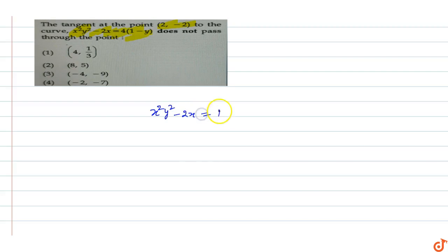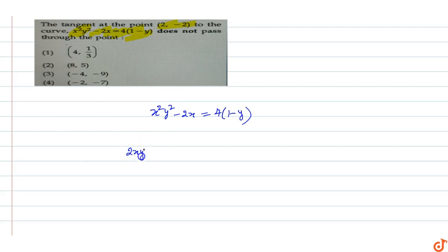We have the curve equation x²y² - 2x = 4(1 - y). To find the slope, we differentiate with respect to x. Differentiating, this will become 2x·y² + 2y·y'·x² - 2 equals the right-hand side differentiated.